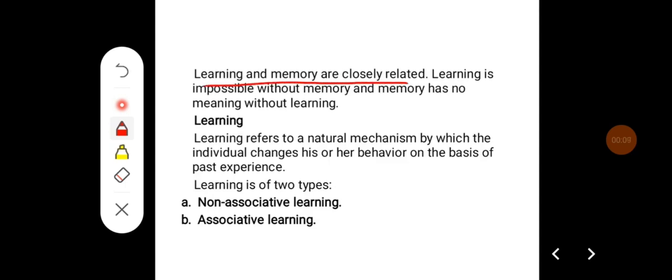Learning and memory are closely related. Learning is impossible without memory, and memory has no meaning without learning. Learning refers to a natural mechanism by which the individual changes his or her behavior on the basis of past experience.